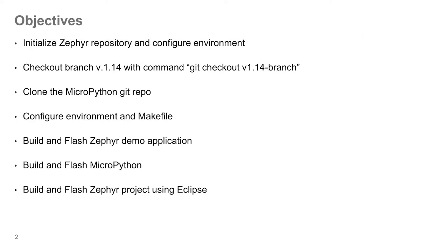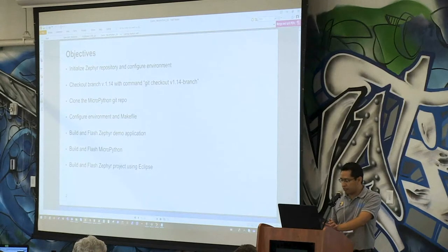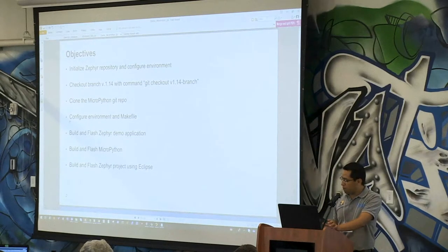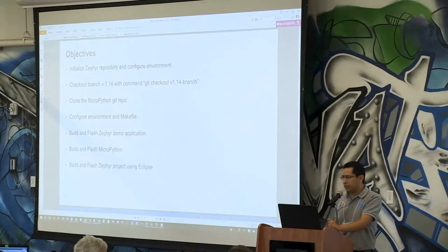In this specific hands-on, we provide something similar to the SDK — it's exactly the same. So once you run the SDK, everything you do here should go smoothly. First, you have to initialize the repository and configure it, which is already done on your virtual machines. Then you check out this branch with the provided command. You also have to clone a MicroPython repo, make a slight modification to the make file, build the Zephyr application, and then build a MicroPython application on top of Zephyr.